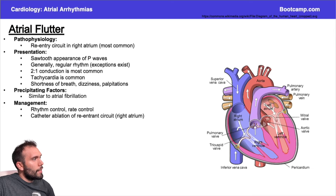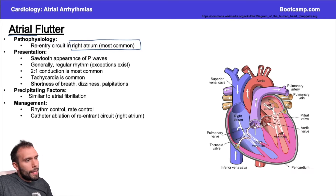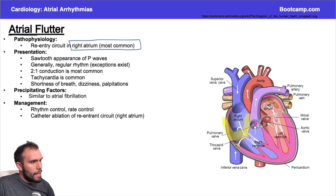For atrial flutter, this is another arrhythmia generated in the atria, but the difference is this is primarily going to be the right atrium. Remember, we usually talk about automatic foci generated in the left atrium around the pulmonary veins — this is primarily the right atrium, and it's going to be a circuit in the right atrium.